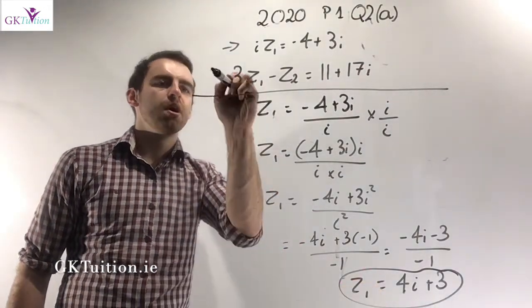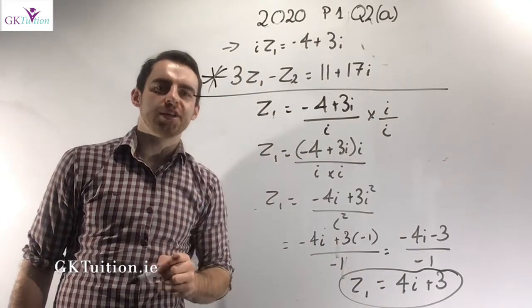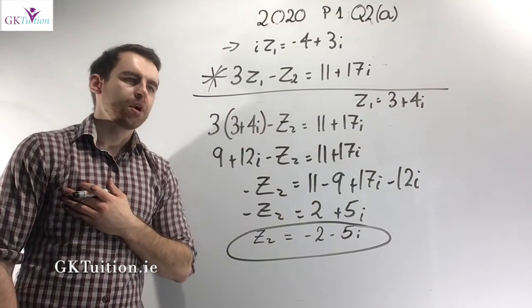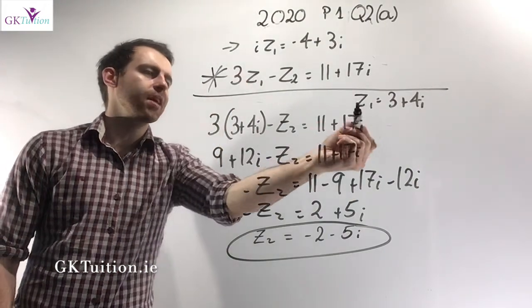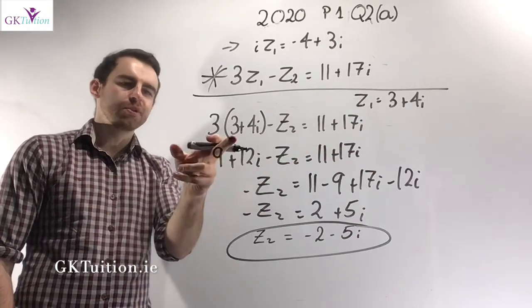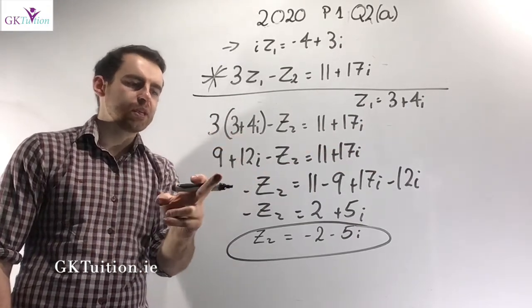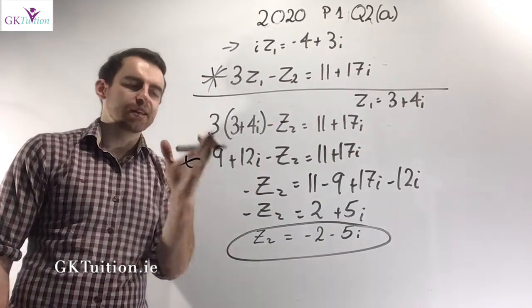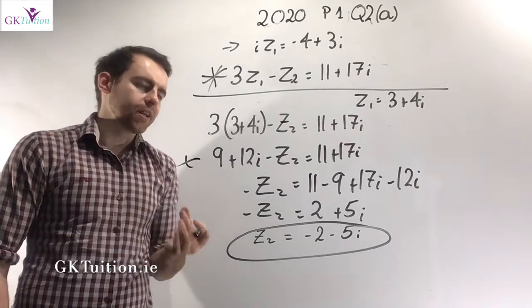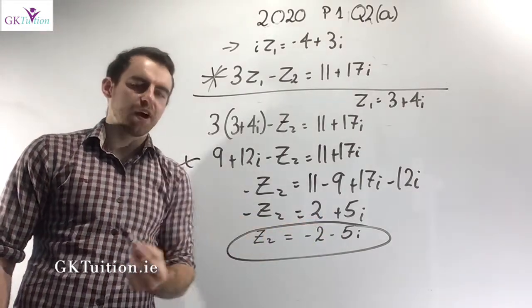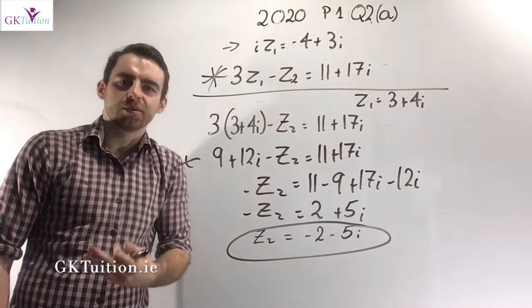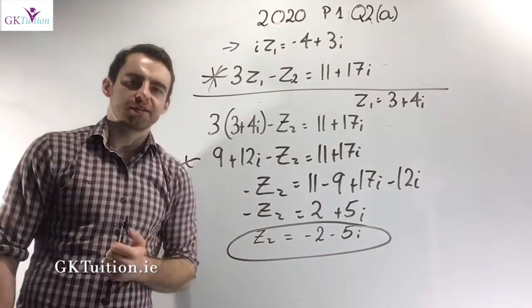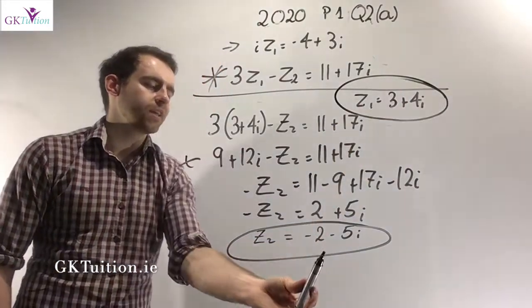Now that I have a value for z1, I'm going to sub it into the second equation to get a value for z2. I take the second equation and instead of z1, I sub in 3 plus 4i. Then 3 times that gives me 9 plus 12i. I move everything to the right-hand side except for minus z2, and the right-hand side simplifies to 2 plus 5i. Since I don't want minus z2, I change all signs, and z2 equals minus 2 minus 5i.